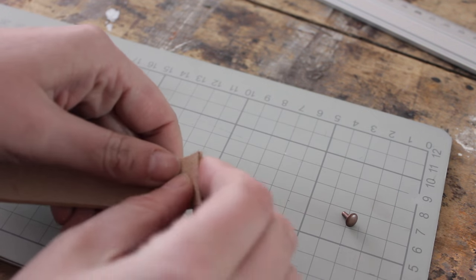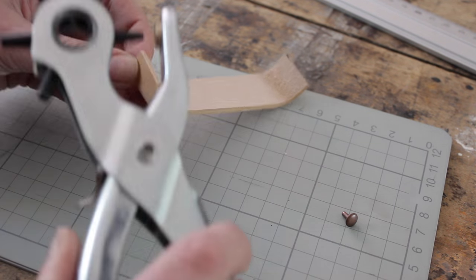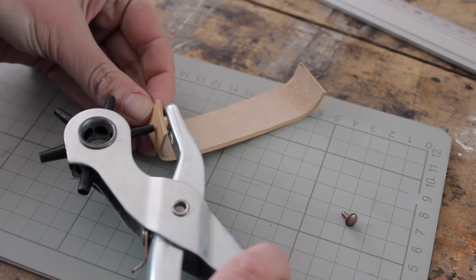On your handle, fold over the top one centimeter. Now in the middle of your fold, punch your hole.